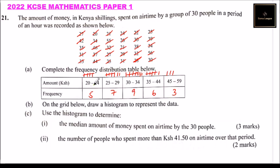We also need to add the frequency density column — that is, frequency divided by class width — so that it helps us plot our histogram. The frequency density values are: 1.0, 1.4, 1.8, 0.6, and 0.2.